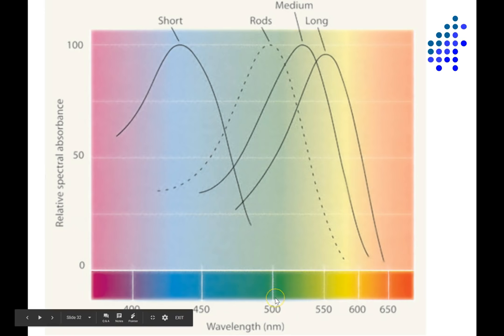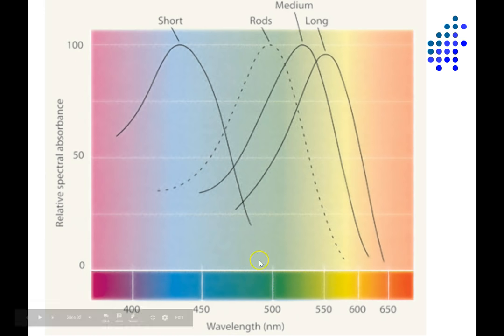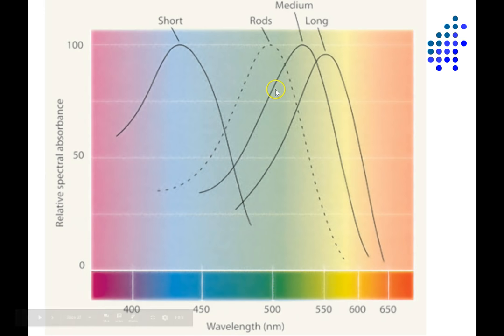If I were to look at an object that was bouncing back mainly 500 nanometer wavelength light, we would normally perceive this as green. You can see that it would maximally activate the medium wavelength cones, it would hardly activate the short ones at all, and it would also activate the long wavelength cones a little bit, but not as much as the medium wavelength cones.